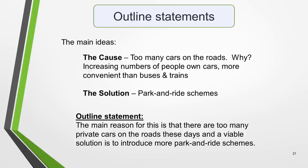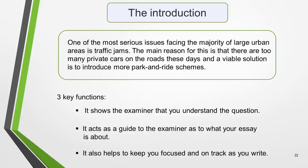Here are the main ideas again. The cause was too many cars on the road because increasing numbers of people own cars and they're more convenient to use than buses and trains. And the solution was park and ride schemes. And this is one way to develop them into an outline sentence: The main reason for this is that there are too many private cars on the roads these days and a viable solution is to introduce more park and ride schemes. This introduction achieves three important functions: it shows the examiner that you understand the question, it acts as a guide to the examiner as to what your essay is about, and it also helps to keep you focused and on track as you write.